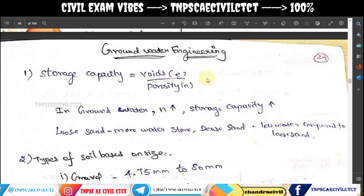First, the main goal of Groundwater Engineering is Storage Capacity. We will talk about soil — we have voids and porosity. For groundwater engineering, we increase the porosity. That relates to soil engineering, meaning foundation and soil-oriented topics. For groundwater engineering, the main goal involves water resources and soil.